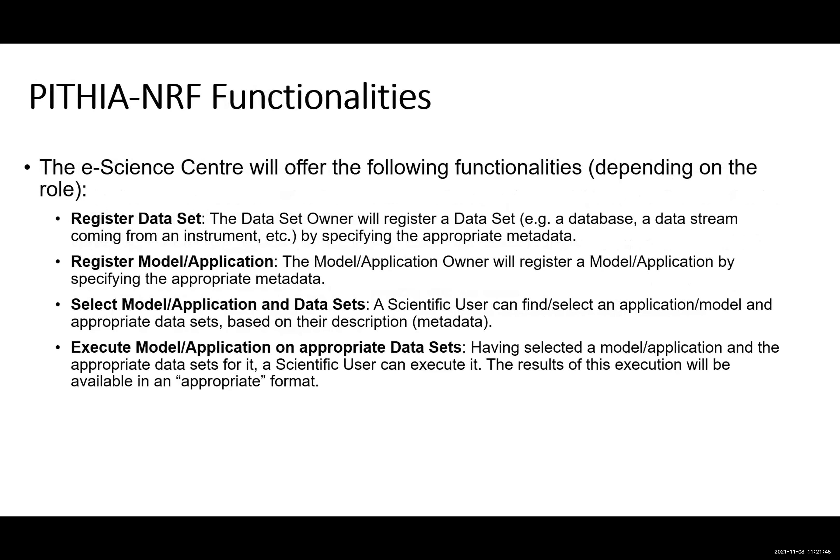These three user types will be able to perform mainly four actions: they will be able to register data sets; register model applications for scientific users to use; select combinations of model applications and data sets; and execute a model application on a data set to create an output data set.